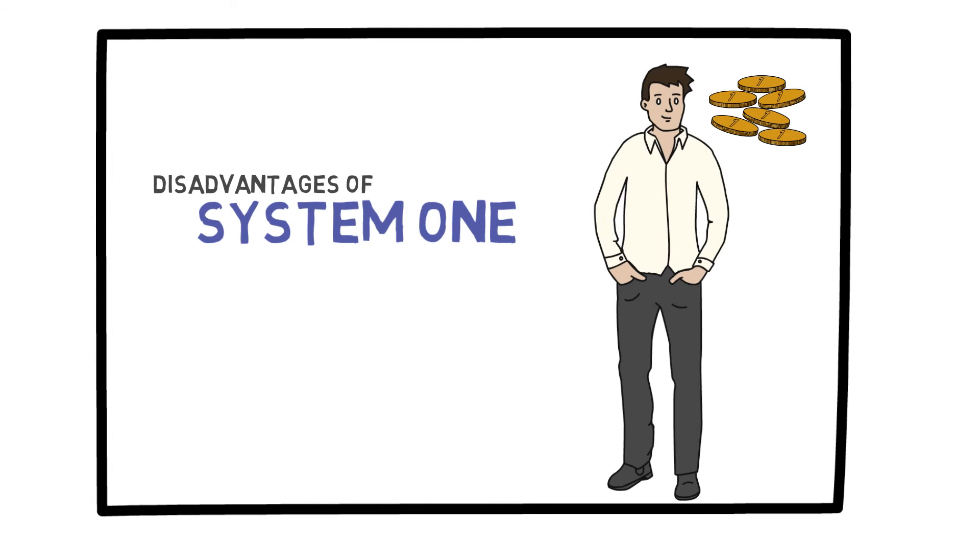However, in terms of statistical and probabilistic thinking, which is the main topic of this class, System 1 is not very accurate. For a simple example, consider this. I toss a coin five times, and I ask you which of the following outcomes is more likely.